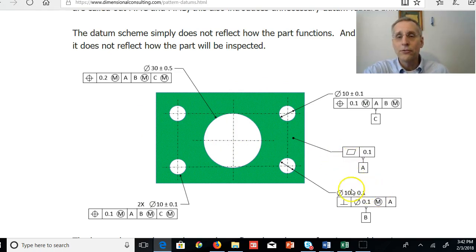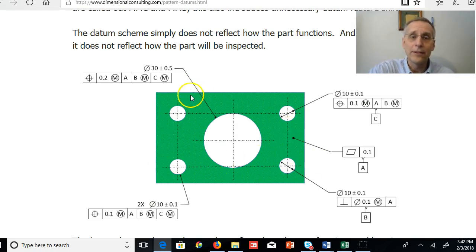But then the designer will often choose one of these holes and designate it datum feature B, choose another hole designated datum feature C, and locate these two holes relative to A and B and C. That implies that these two holes are more important than these, that they somehow play a bigger role in locating the part than these do.